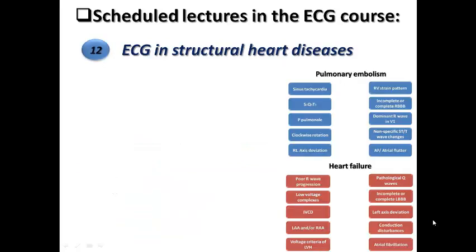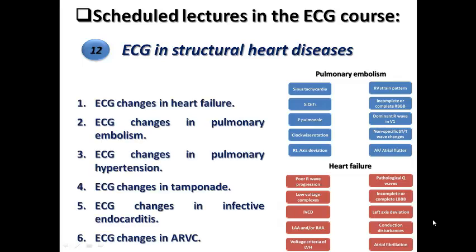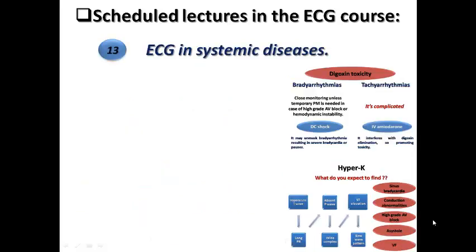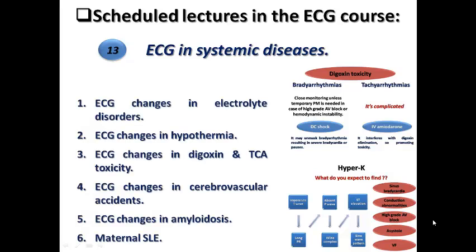The twelfth lecture covers ECG in structural heart disease — ECG changes seen in heart failure, pulmonary embolism, pulmonary hypertension, tamponade, infective endocarditis, and arrhythmogenic right ventricular cardiomyopathy. We are also going to have a lecture on ECG in systemic disease, covering electrolyte disorders, hypothermia, digoxin toxicity, tricyclic antidepressants, cerebrovascular accident, amyloidosis, and neonatal lupus.